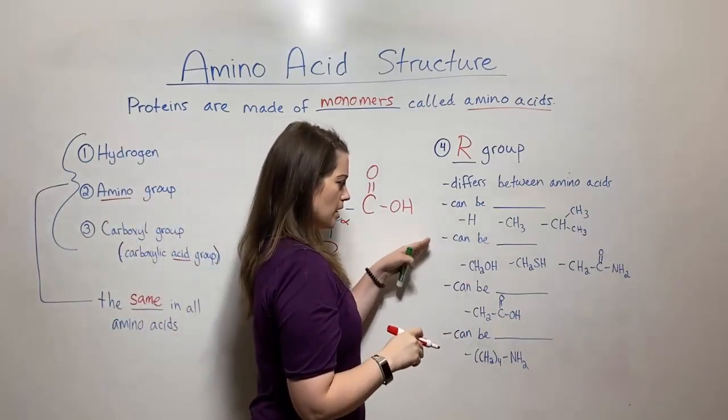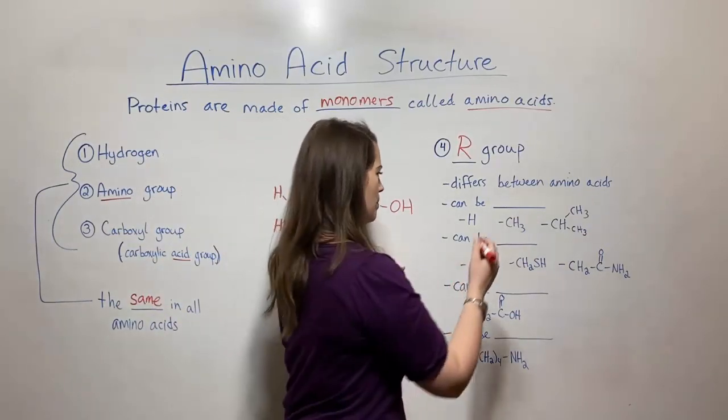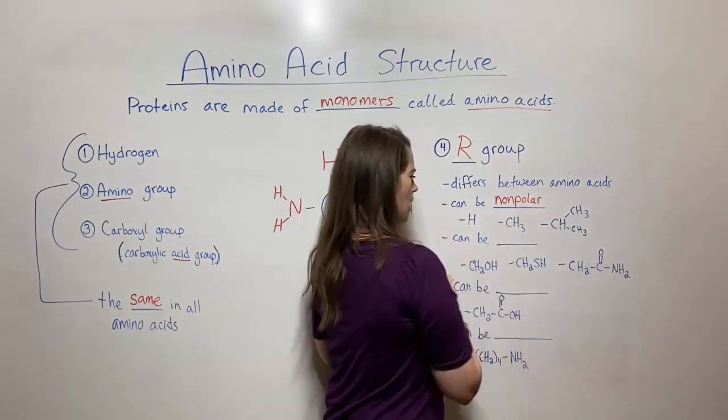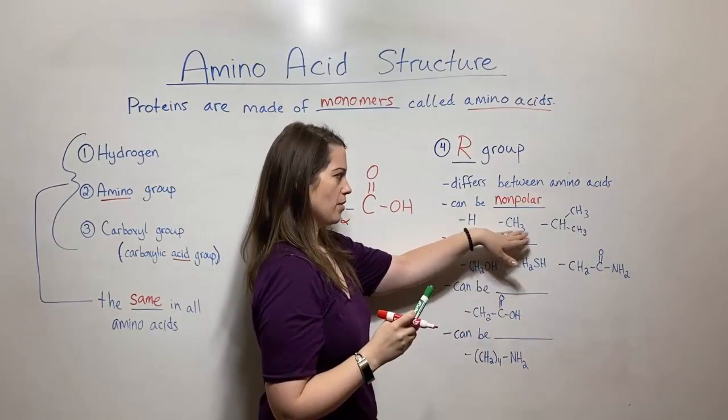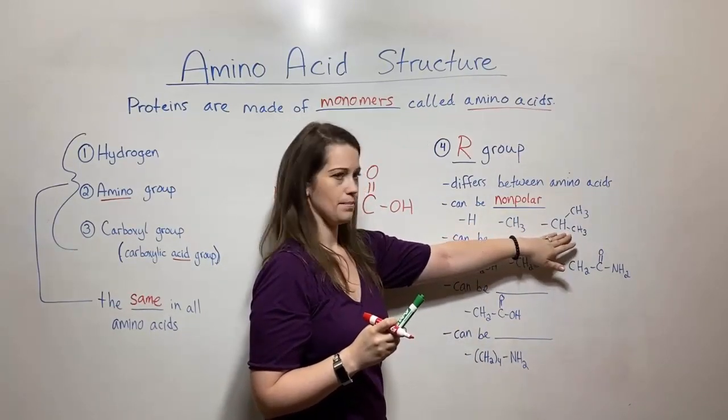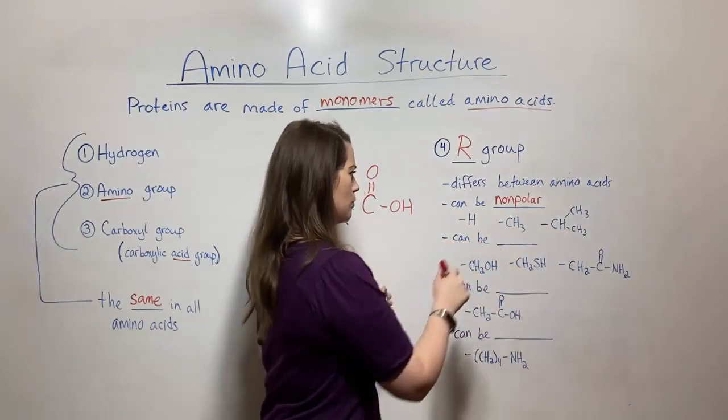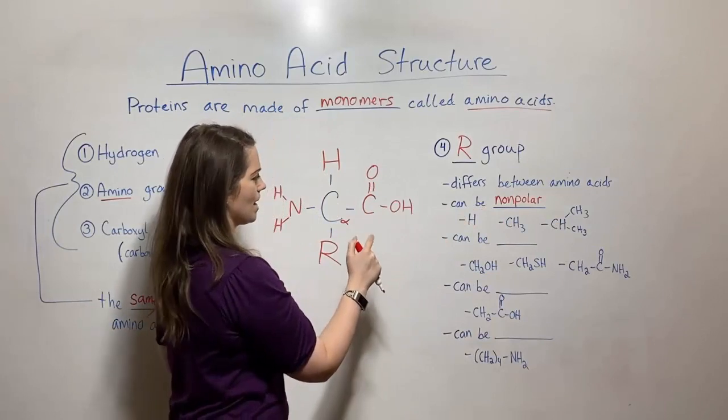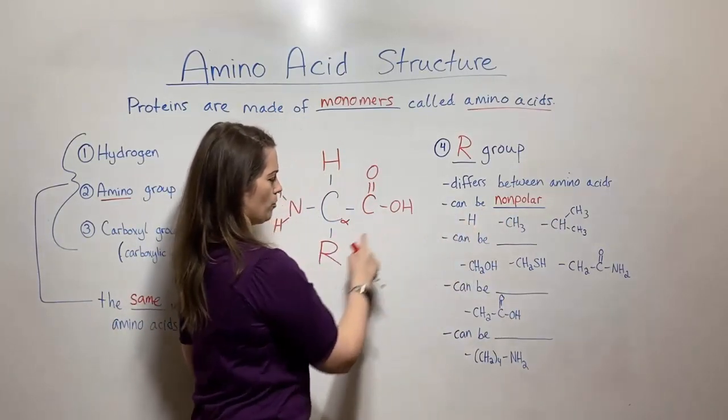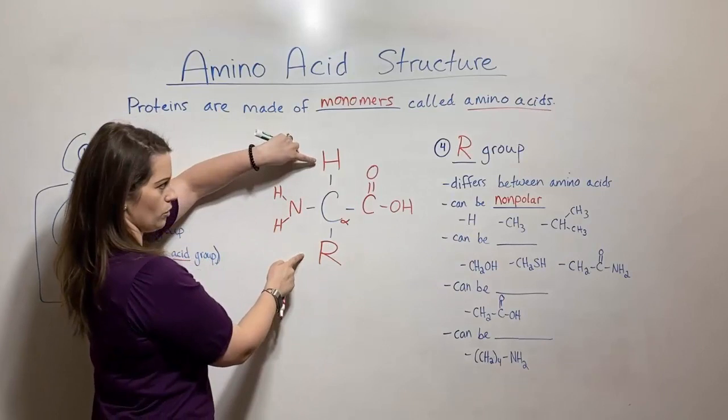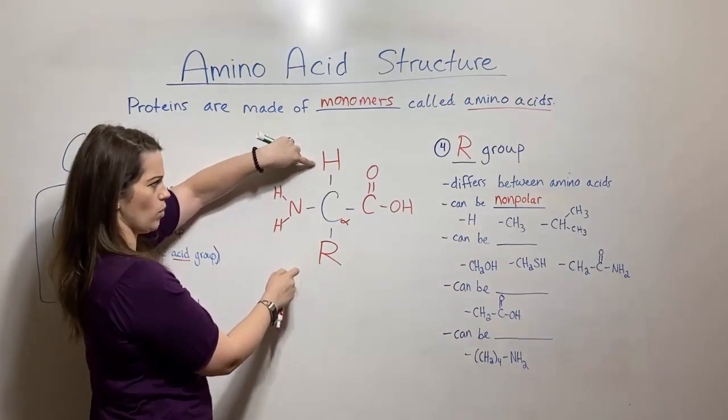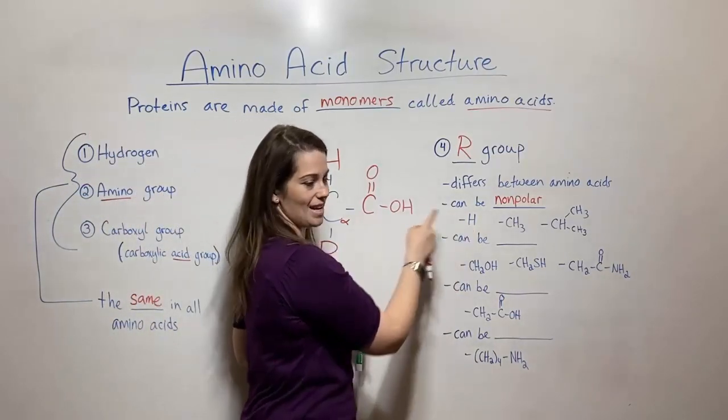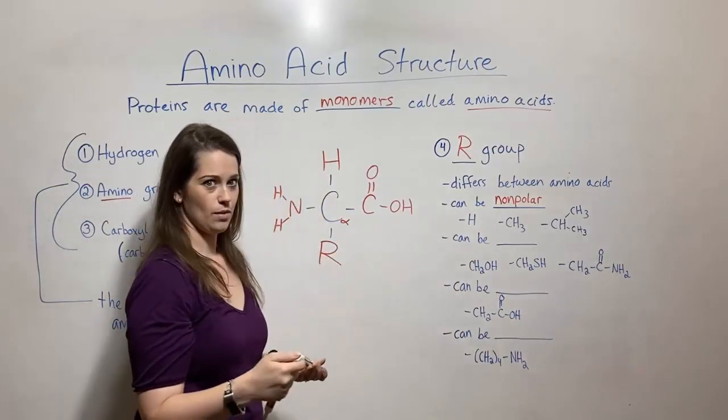So the R groups can fall into four different categories. They can be non-polar. So for example if it's just a simple hydrogen or a methyl group or here we have a more complicated branch carbon chain these would make up glycine, alanine, valine, but those are all non-polar. I do want to point out that glycine when the R group is an H is the only time when you've got two hydrogens here. Usually it's just one hydrogen and then a more complex R group but that R group can be a hydrogen in the specific case of the amino acid glycine.